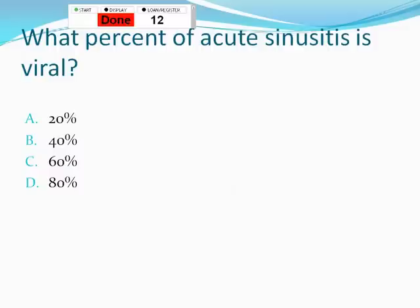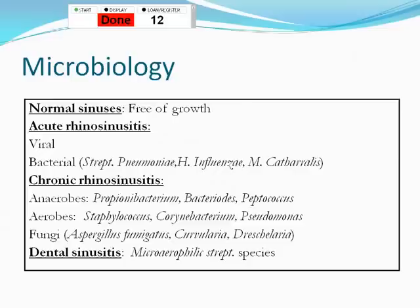The major bacterial causes of acute rhinosinusitis are Streptococcus pneumoniae, Haemophilus influenzae, and Moraxella catarrhalis. For chronic rhinosinusitis, you tend to think more about anaerobes, gram negatives, and fungi — fungi can be acute but is more characteristically a chronic presentation.